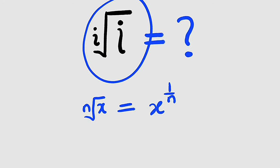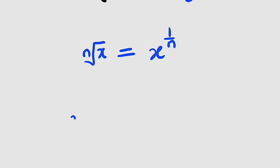Therefore, i-th root of i can be written as i to the power of 1 divided by i.